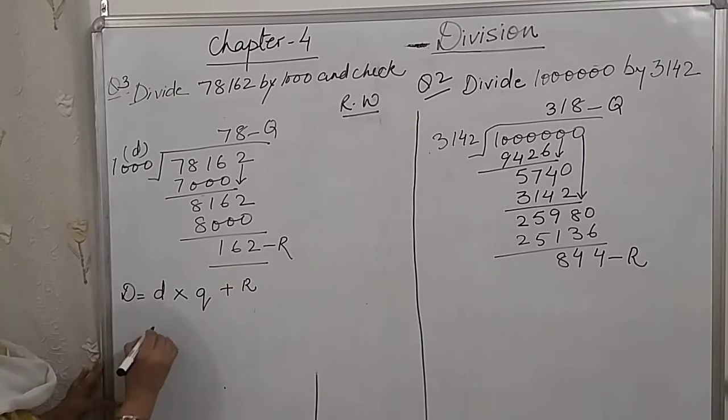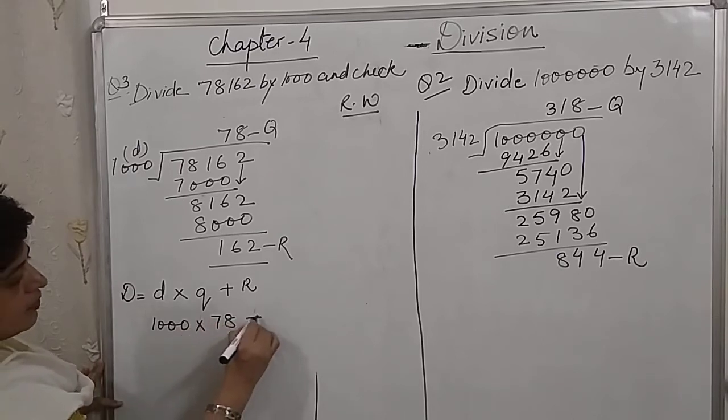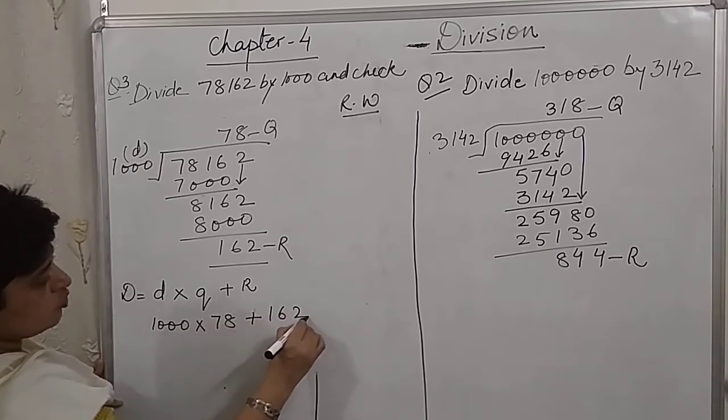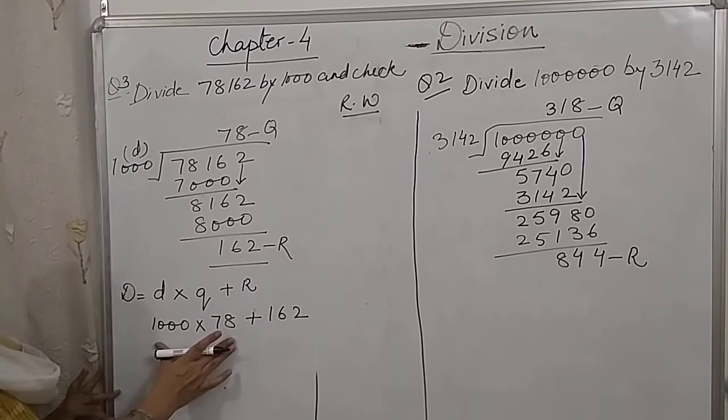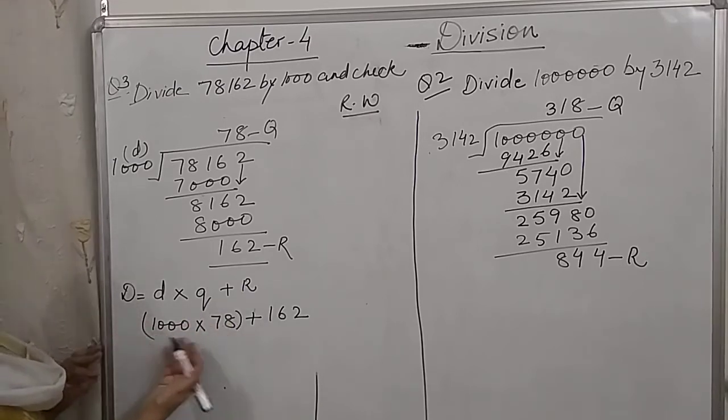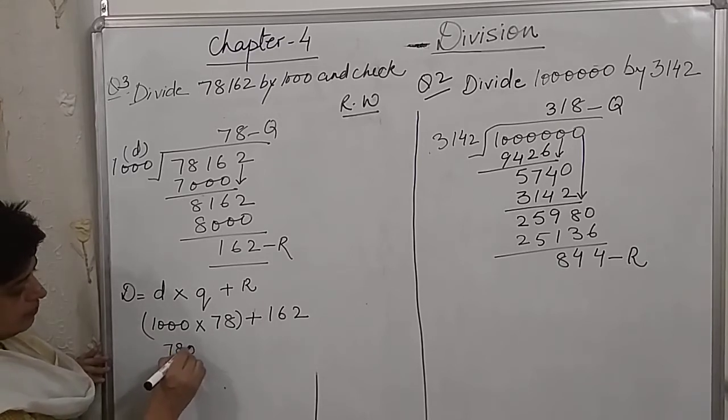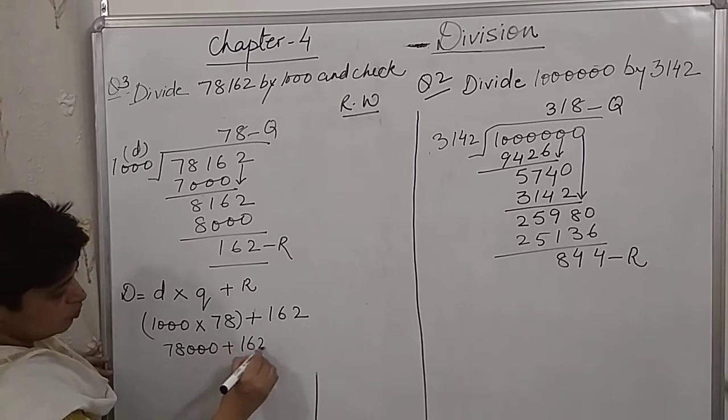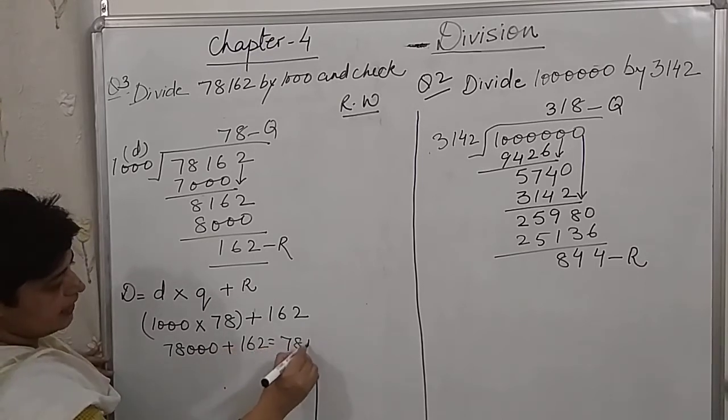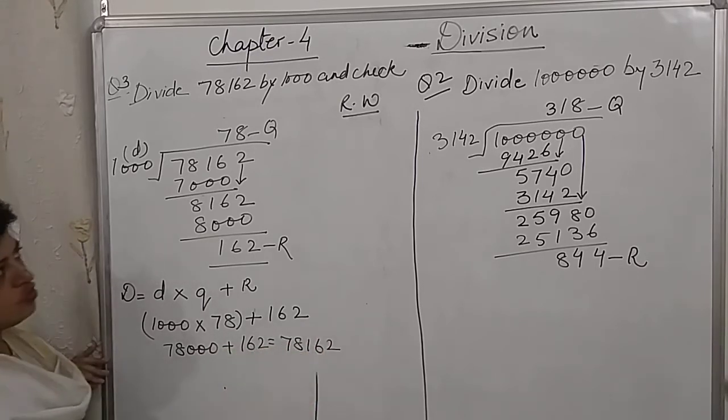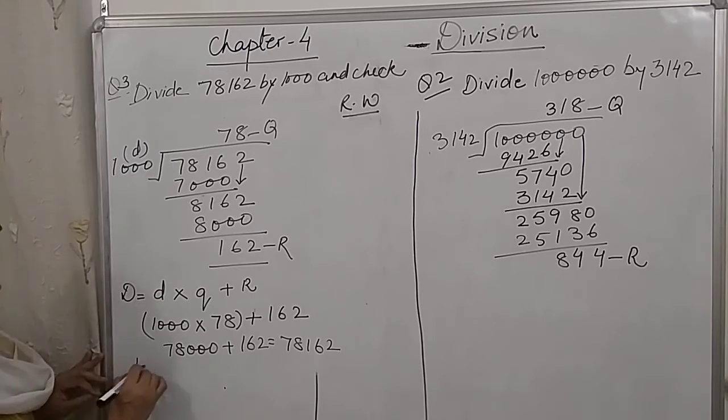Divisor into quotient plus remainder. So, divisor is 1000, quotient is 78 and remainder is 162. We will be first solving this. We can even put it in bracket. Now, we know 78 multiplied by 1000. We only have to put the 0's at the back. Plus 162, it gives us 78162.